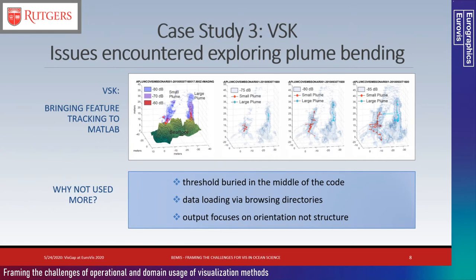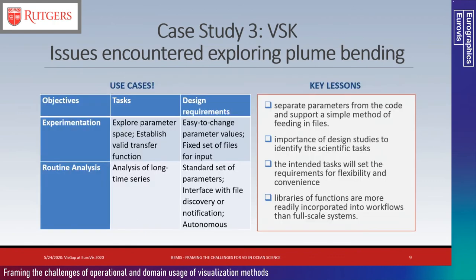In the third case study, one student's attempt to incorporate feature tracking into a MATLAB application is explored. The application successfully segments two plumes, applies skeletonization to capture center lines, and estimates plume orientation. But the code is difficult to use because the threshold is hard to change, the data loading browser requires navigating directories every run, and the default output is just the orientation, not the full structures. Even a simple exploration of use cases would have suggested different design requirements. The experimental phase needs easily changed parameters, while a routine analysis phase would run autonomously with standard parameters.